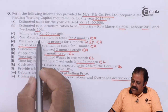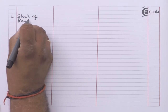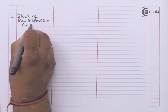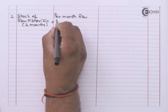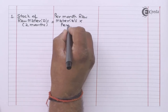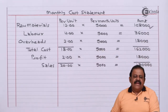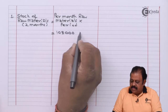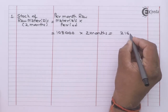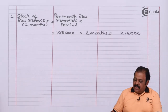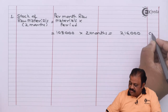Now let us calculate current assets and current liabilities. Raw material remains in stock for two months. Raw material per month requirement is rupees 1,08,000 multiplied by a period of two months = rupees 2,16,000. This will be part of current assets.